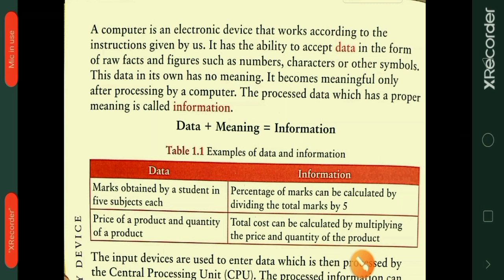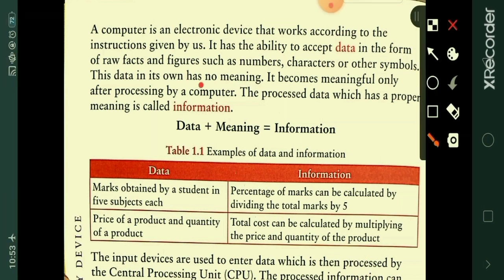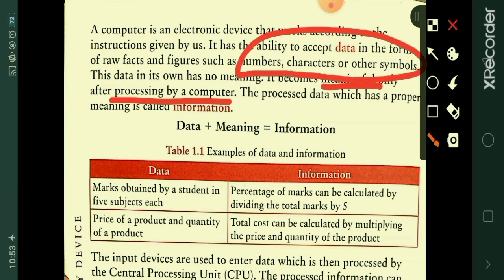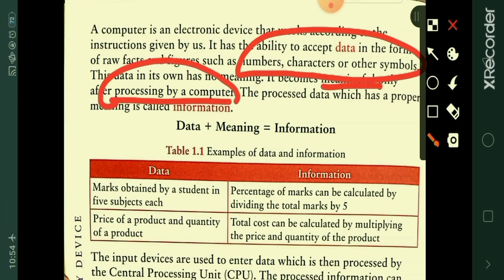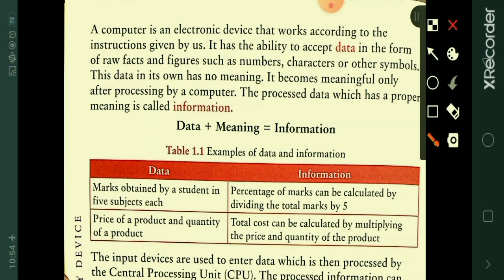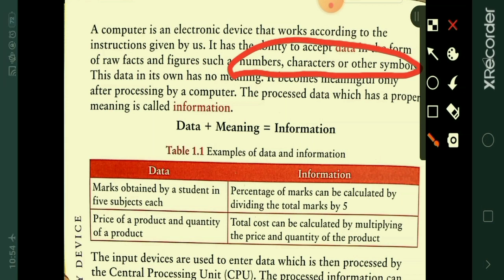These raw facts and figures are meaningless at first. They become meaningful only after processing by the computer — that is, the CPU. The processed data which has a proper meaning is called information.